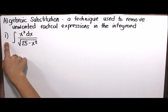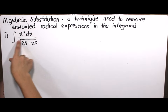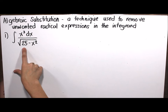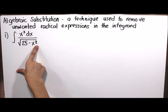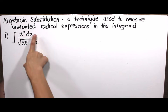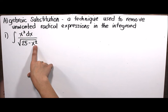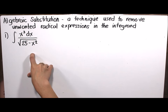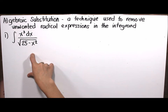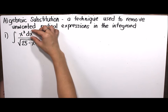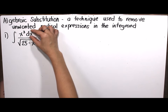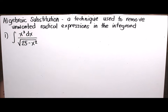For example, we have the integral of x cubed dx all over the square root of 25 minus x squared. We cannot use the leading to inverse formula in this case because if we let u squared equal to x squared, the square root of x squared is x and the differential is dx. This means if this is arcsine, the numerator should contain only dx, but we have x cubed.